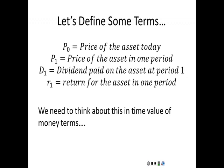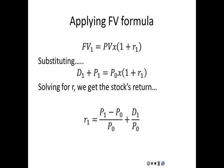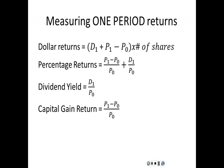Let's think of this in a time value of money context. The future value in one period is the present value times one plus R. Substituting our terms, the future value is the dividend in one year plus the selling price in one year, and the present value is simply the price of the asset today. If we rearrange this equation and solve for R, the first term is P-one minus P-zero divided by P-zero — that's the change in price over the initial price — and the second term is the dividend divided by the initial price.